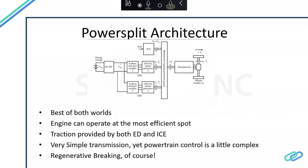Moving on to power split architecture. This combines the best of both worlds — best of series and parallel — and is sometimes known as series-parallel architecture. It has two electric drives and one engine coupled such that the engine can operate at whatever point it wants at all times and still provide whatever traction the vehicle needs. The traction is provided by both engine and electric drive together, so the engine can be smaller than required for performance alone.